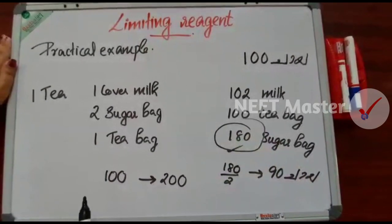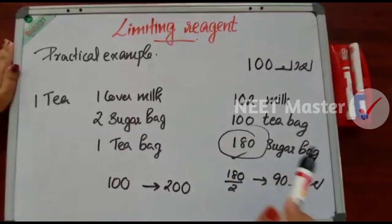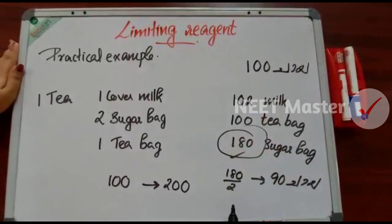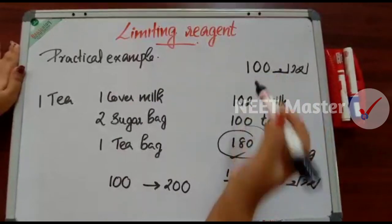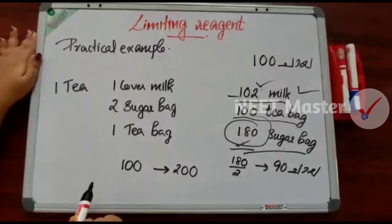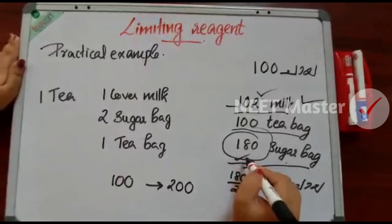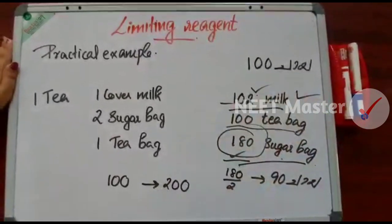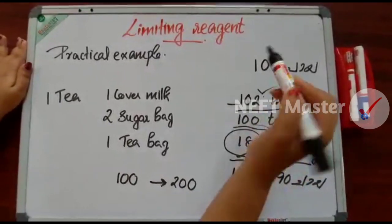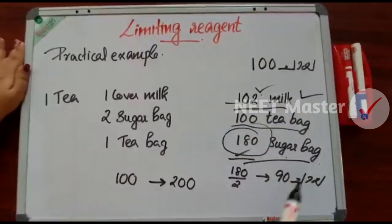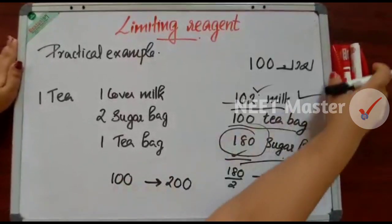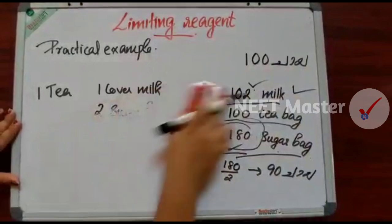You should use 180 sugar bags. This one is eating 180 — this is a record of the limiting reagent. Although we keep going about limiting reagent, let's take an example. I have a practical example.